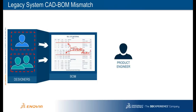They may also add non-CAD-related items, such as lubricants, that are not reflected in the CAD model. The manual modifications lead to repeated BOM errors and mismatch problems. The time spent finding and correcting BOM mismatches significantly impacts your development cycle time and product quality.